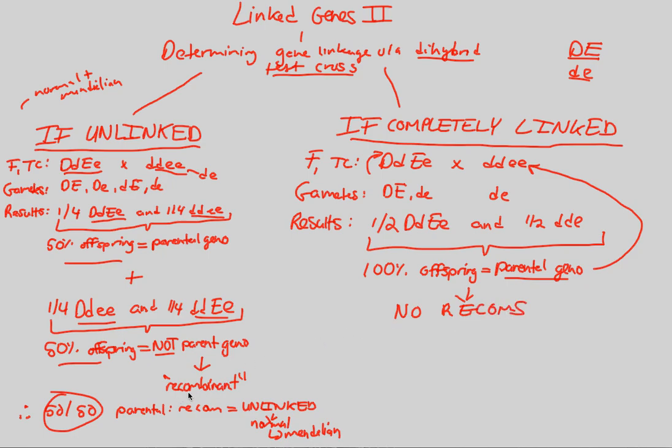Remember, what are recombinants? Recombinants are things that are not the parental genotype. We just got 100% of everything as the parental genotype, thus we have no recombinants. If you see no recombinants, that tells you that the genes you're looking at, the alleles you're looking at, are completely linked. These guys are definitely completely linked because of the lack of recombinants.